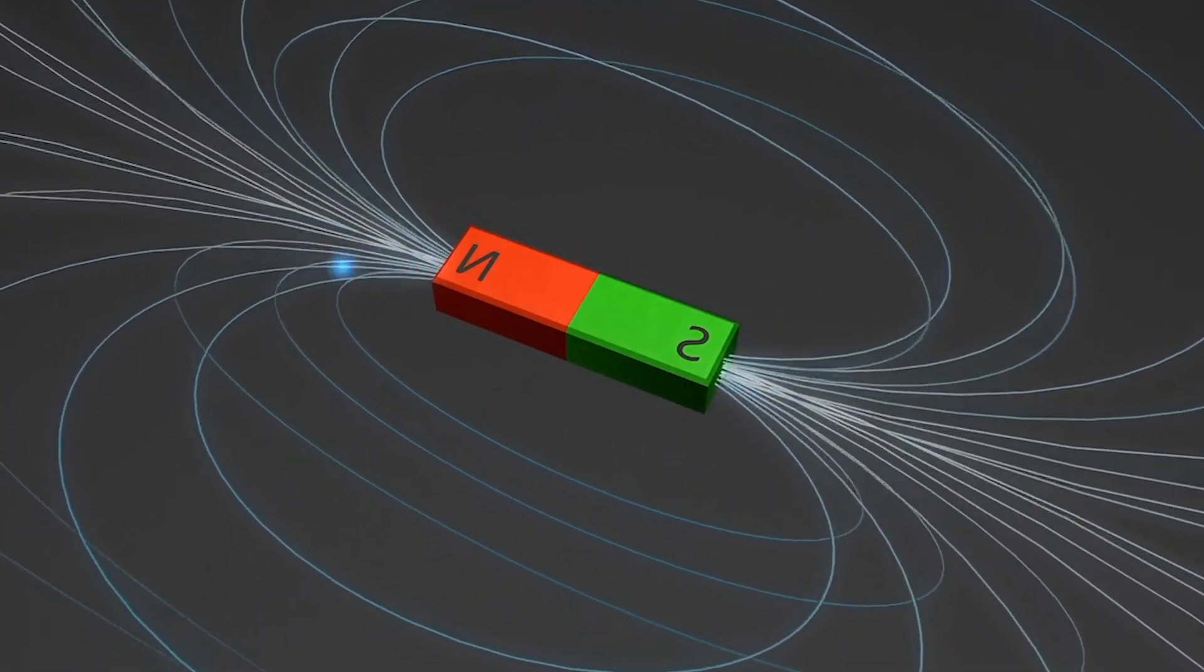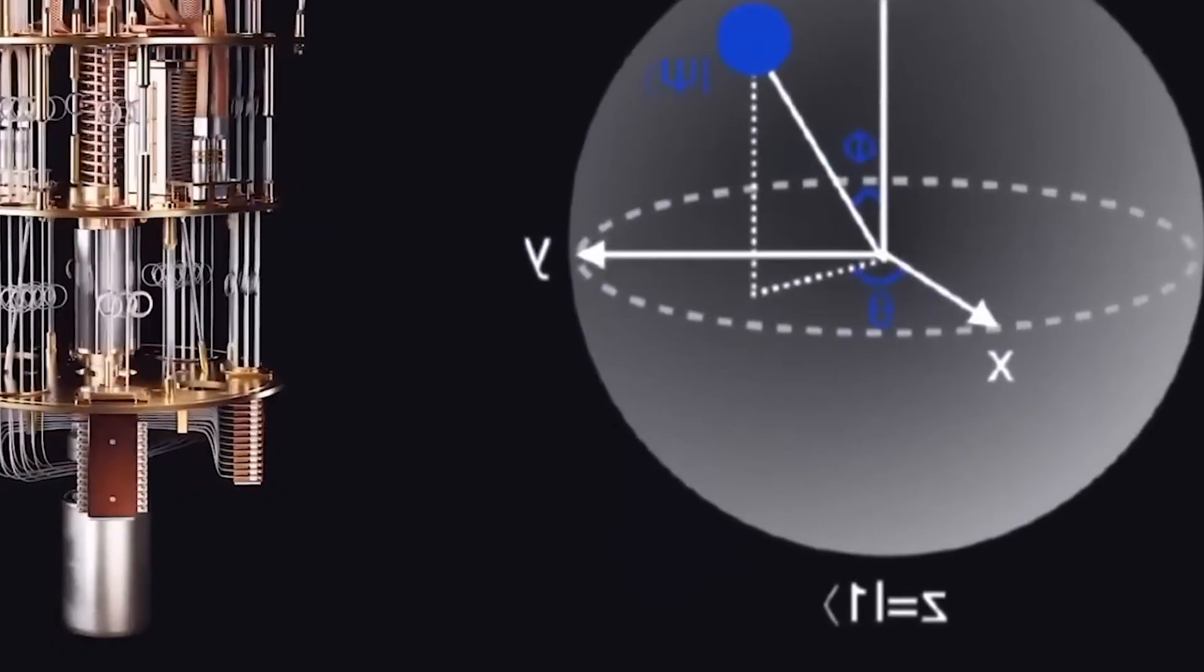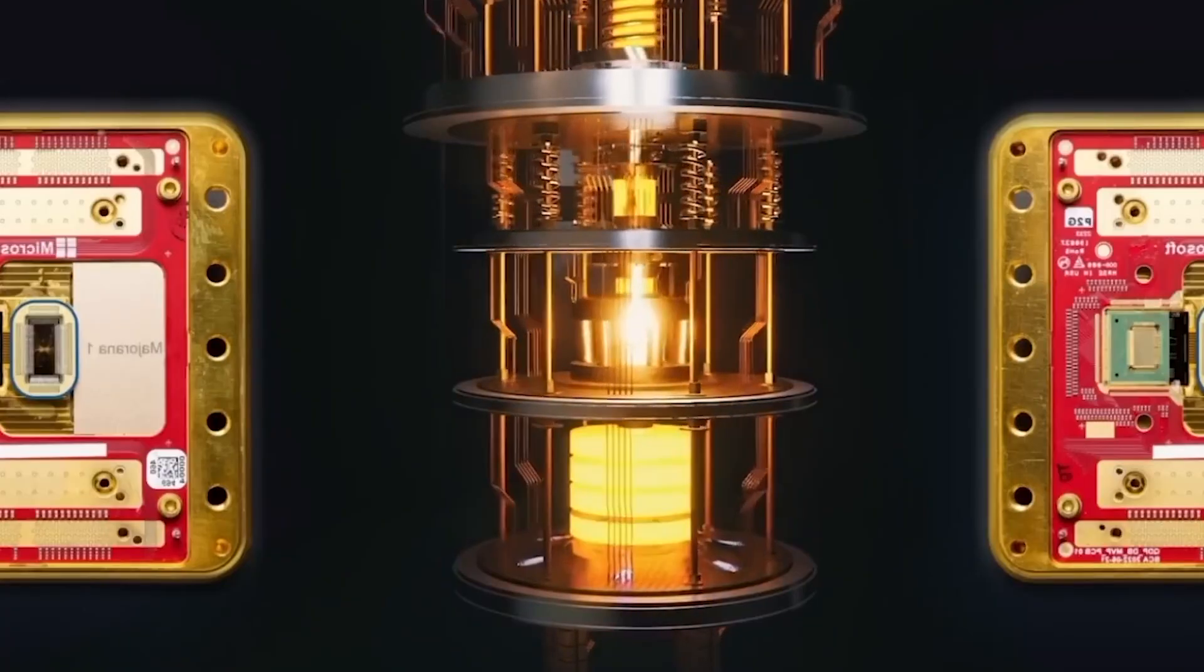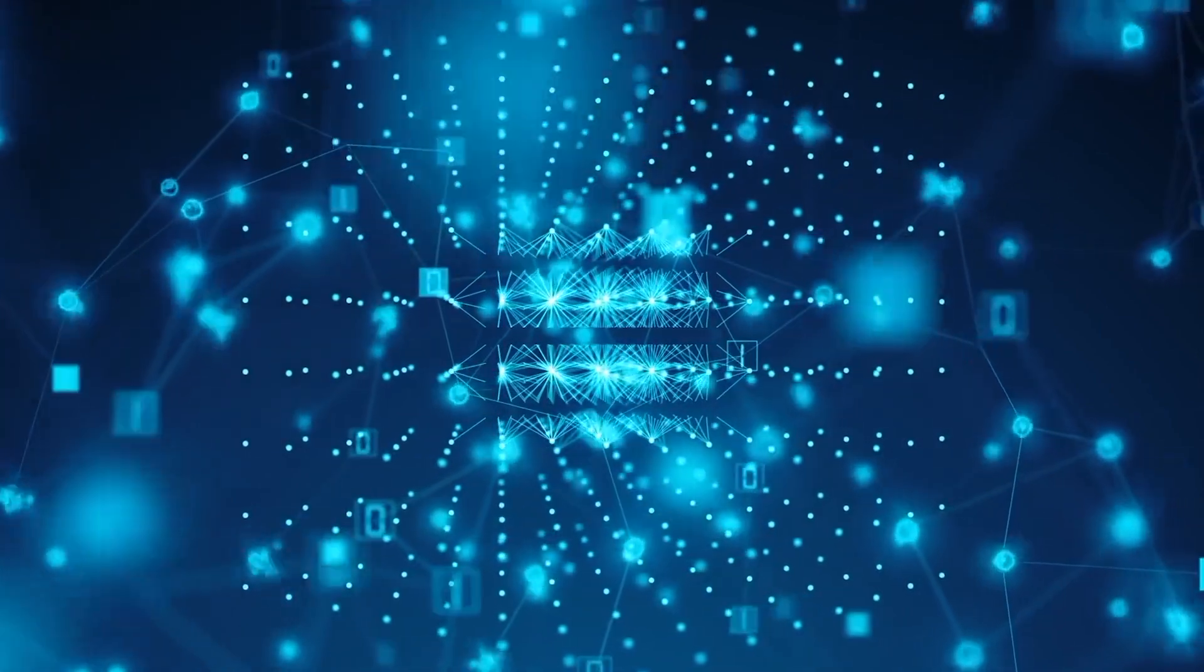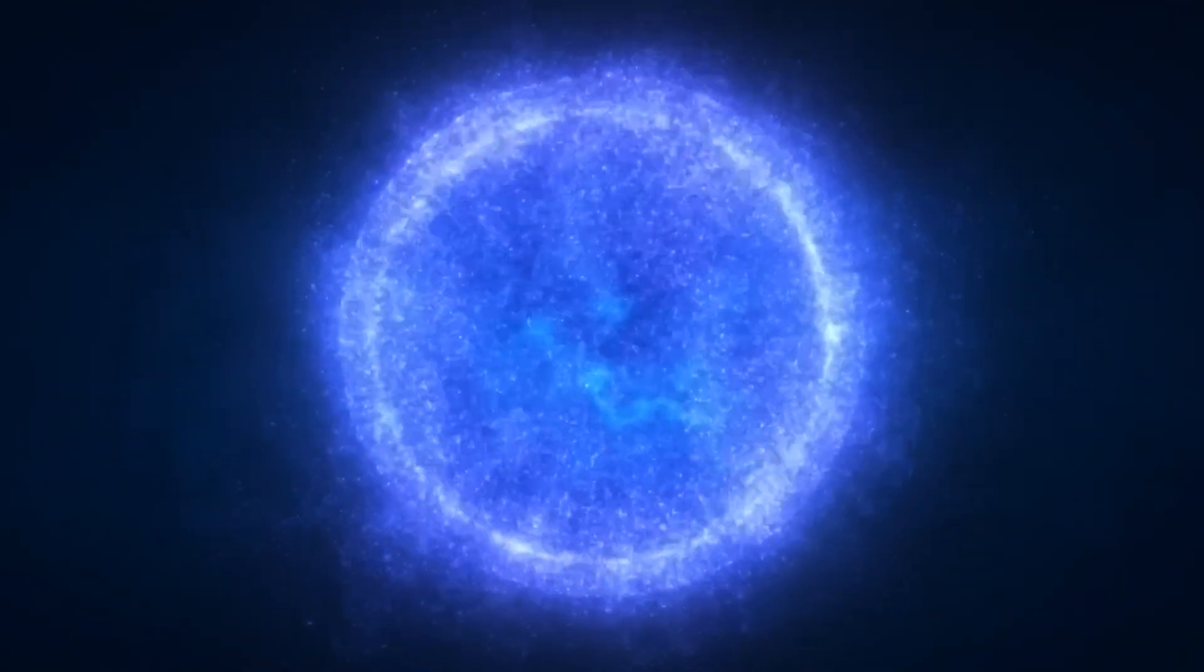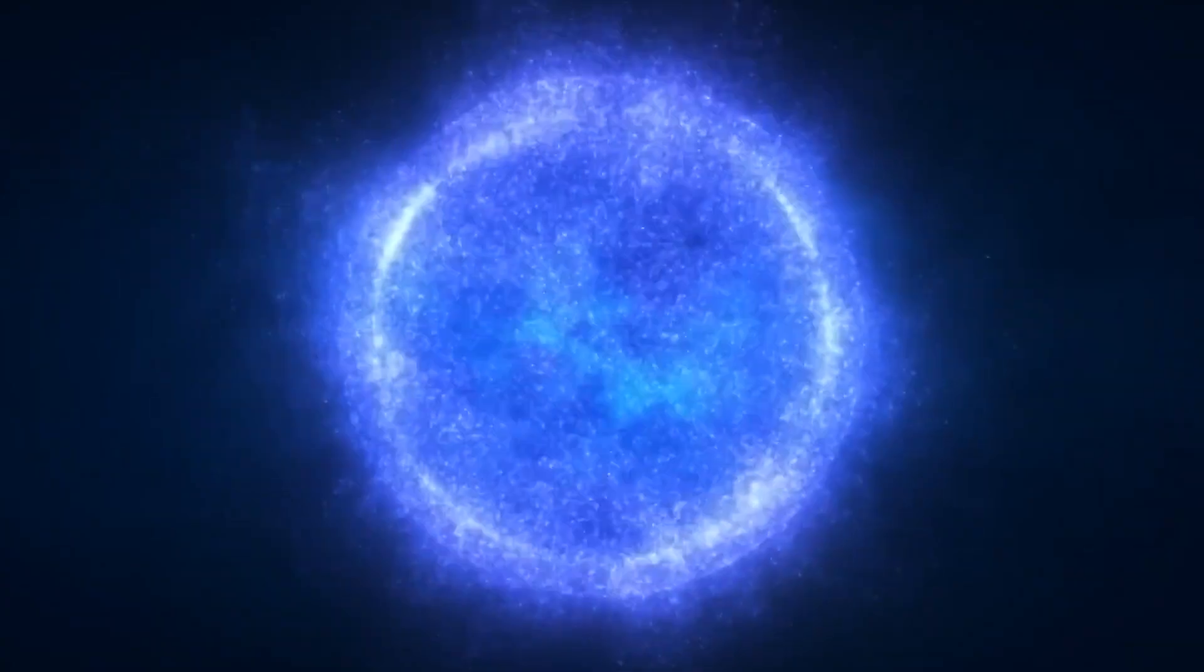This violates locality constraints as two separate ring regions appear entangled in a single repeating waveform. Most disturbing is the apparent temporal asymmetry, suggesting that future ring states somehow influence earlier measurements.